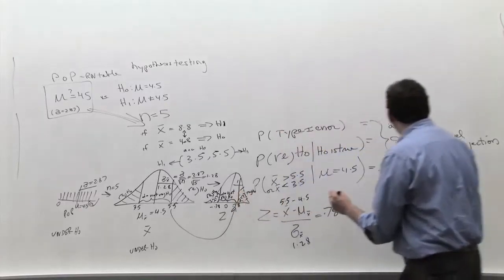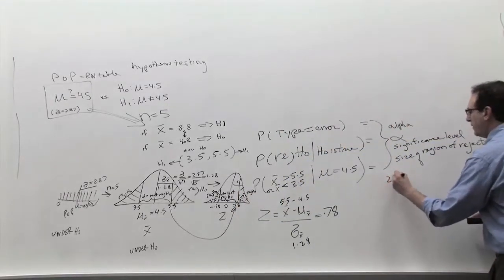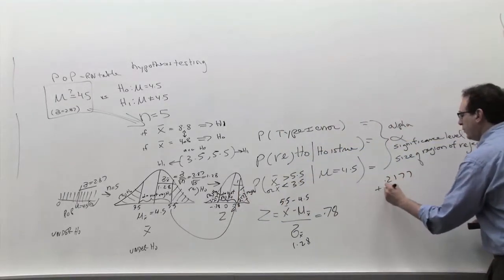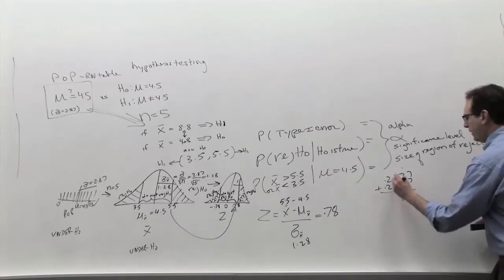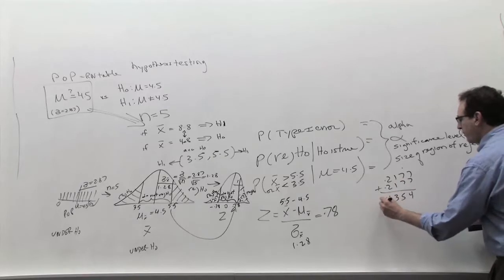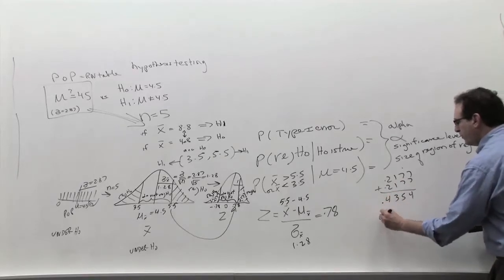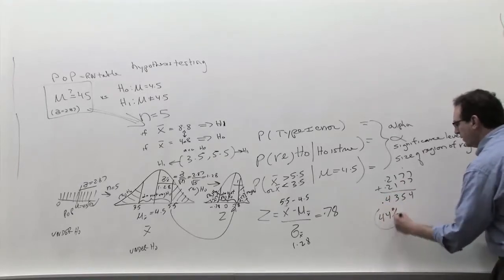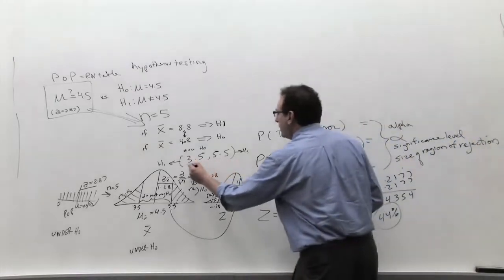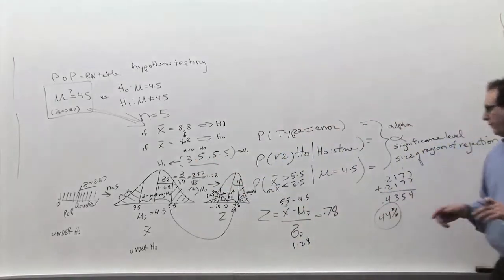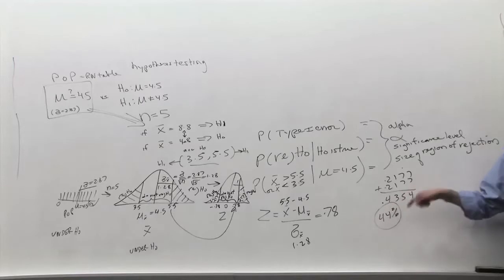And the alpha, therefore, is going to be 2177 plus 2177, or exactly 0.4354, which is about 44% if you round to two places. So an alpha of 44% is not acceptable, because we're saying if you follow this rule — whoever gave it to us — you're going to make a mistake 44% of the time. You're going to say perfectly good tables are bad 44% of the time, and that's not good.